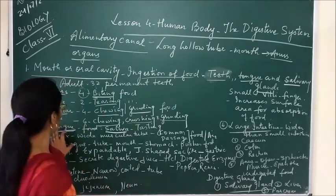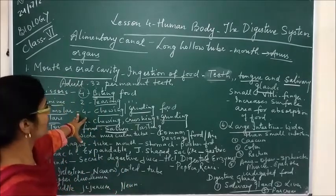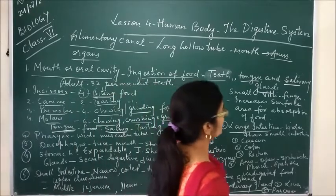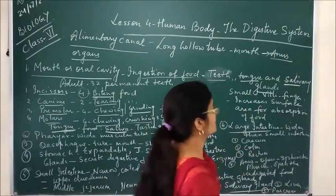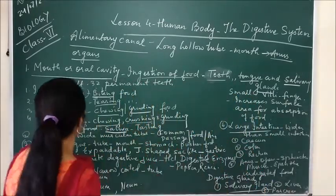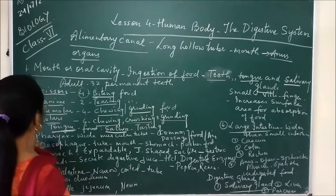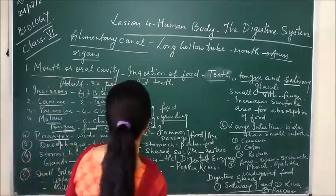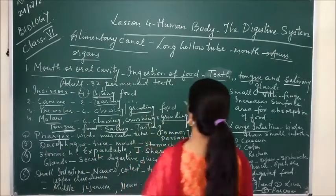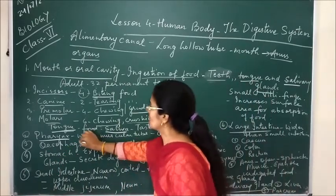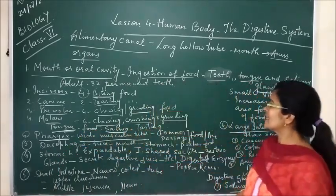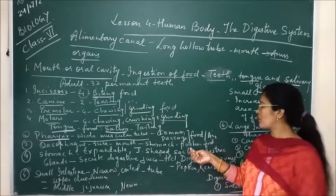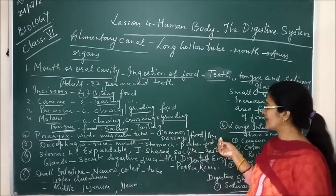So the oral cavity mostly consists of teeth, tongue and salivary glands. The second organ is the pharynx. The pharynx is a wide muscular tube-like structure and it is a common passage for both food as well as air.